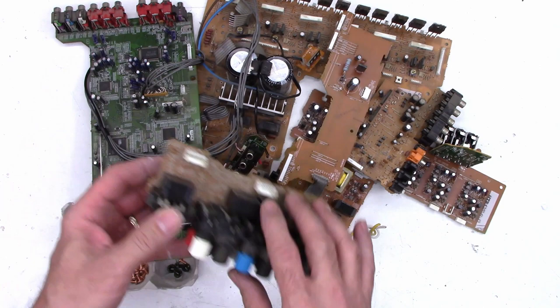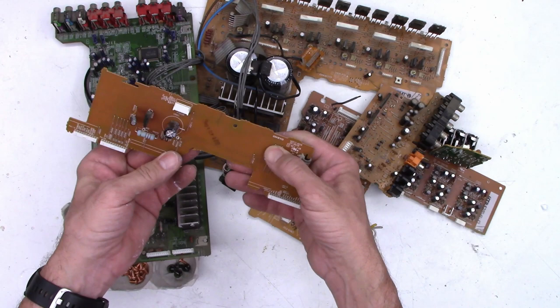This is the component video input board with a couple little Omron relays, small relays on that. I'll save that as well.